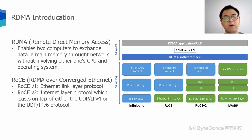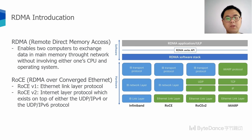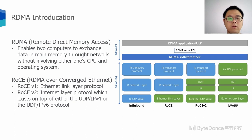RoCE is short for RDMA over Converged Ethernet. There are two RoCE versions, RoCEv1 and RoCEv2. RoCEv1 is an Ethernet link layer protocol and hence allows communication between any two hosts in the same Ethernet broadcast domain. RoCEv2 is an Internet layer protocol which runs on top of the UDP protocol. That means the RoCEv2 packets can be routed. In this talk, all we talk about RoCE is the RoCEv2.